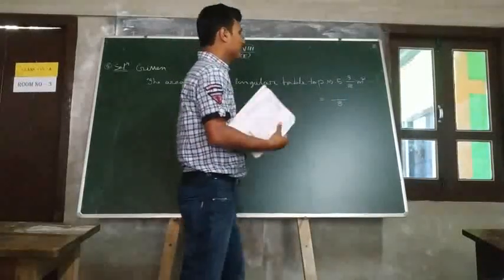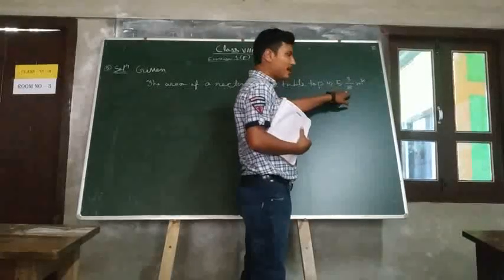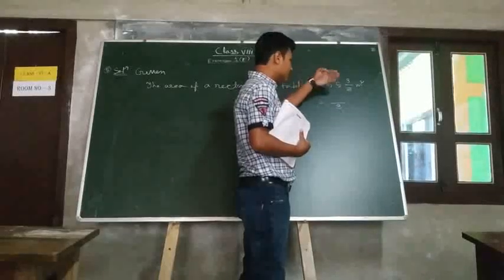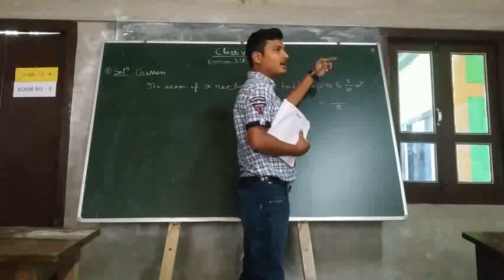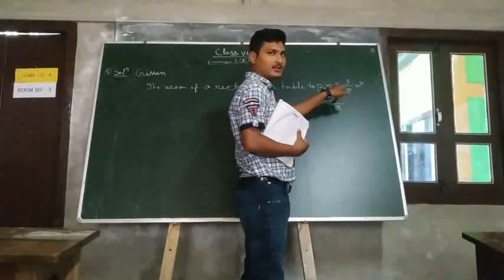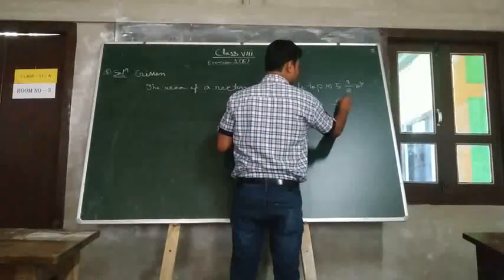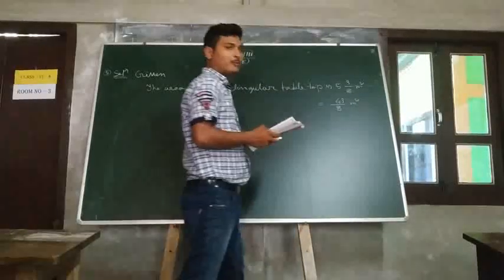First, we multiply 5 with 8 and we get 40. Then we add that result with the numerator. That means 40 plus 3 equals 43. So we get 43/8 meter square, which is an improper fraction.